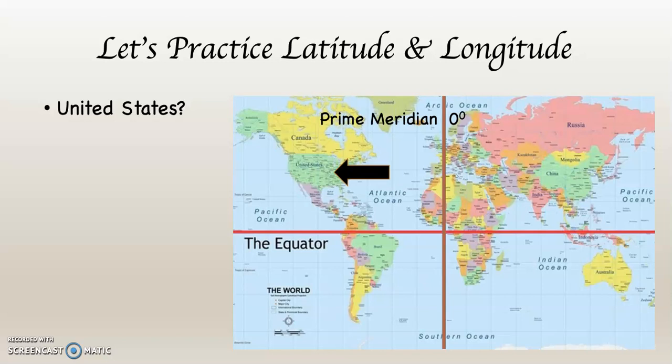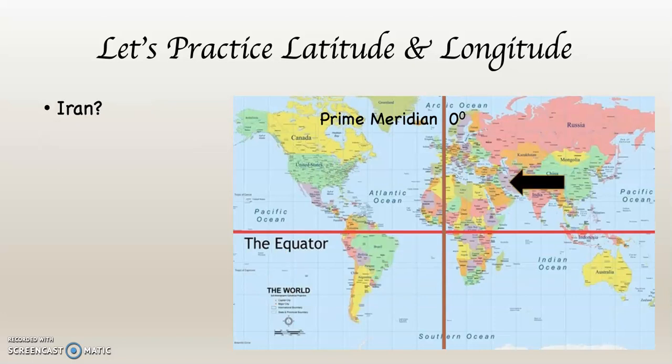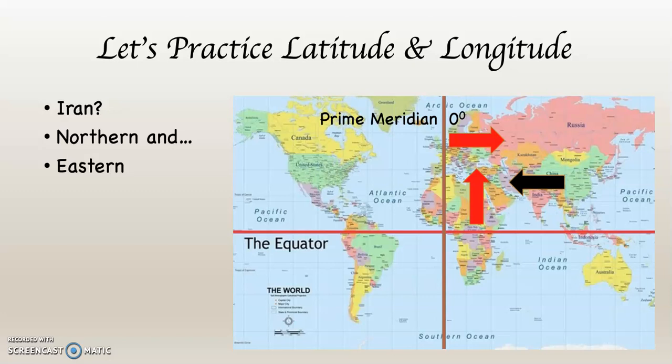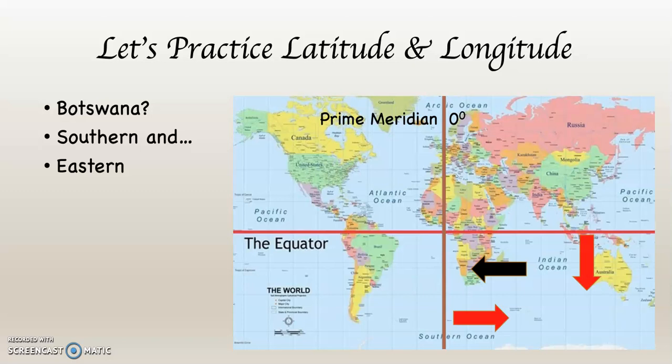Here's the United States. Now we know that every place has at least two hemispheres — a latitudinal hemisphere and a longitudinal hemisphere. The United States is in the northern hemisphere and the western hemisphere. Argentina is in the southern hemisphere and the western hemisphere. Iran is in the northern hemisphere and the eastern hemisphere. And Botswana is in the southern hemisphere and the eastern hemisphere.